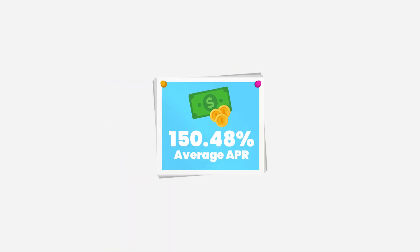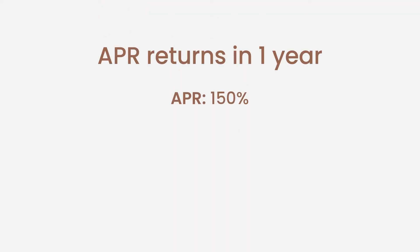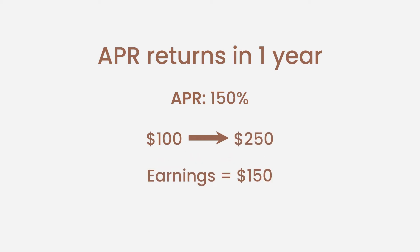As an example, let's analyze the returns with an average APR on ApeSwap, which is around 150%. If you deposit $100 worth of tokens, without compounding you will earn $150 at the end of the year, if the price of the tokens doesn't change.